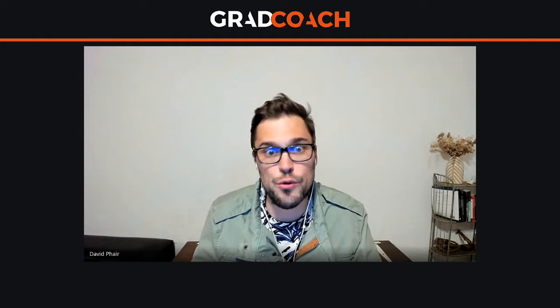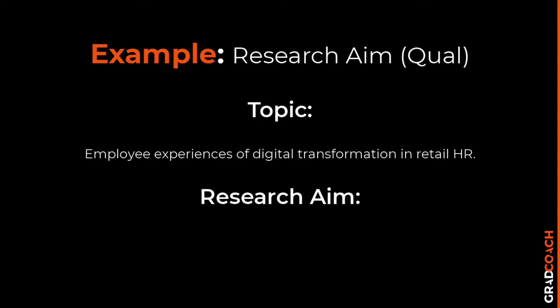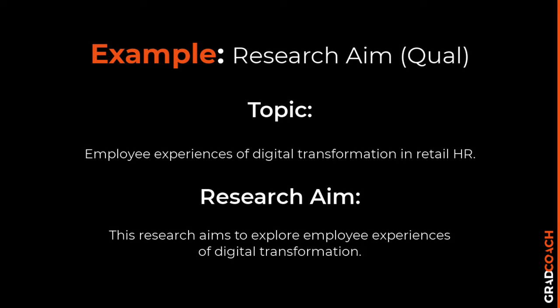With qualitative research, it's going to be different from quantitative. A sample study might have the topic of employee experiences of digital transformation in retail HR. The research aim might be: 'this research aims to explore employee experiences of digital transformation in retail HR.' The key words here are 'aims to explore' — a common qualitative aim verb — and 'experiences,' which is typical as a qualitative aim focus. With that high-level statement, we can see what the study set out to do, so we can later verify whether the researchers followed through on it.